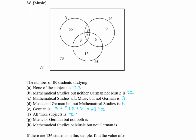Music or German but not both: we rule out X and the 6, leaving Music regions of 3 and 13, and German regions of 8 and 9, which gives us 33.